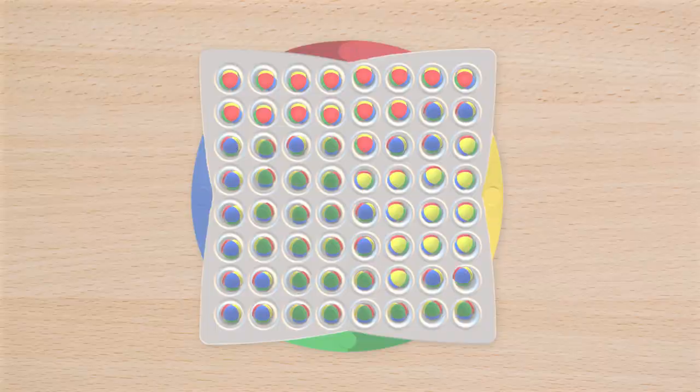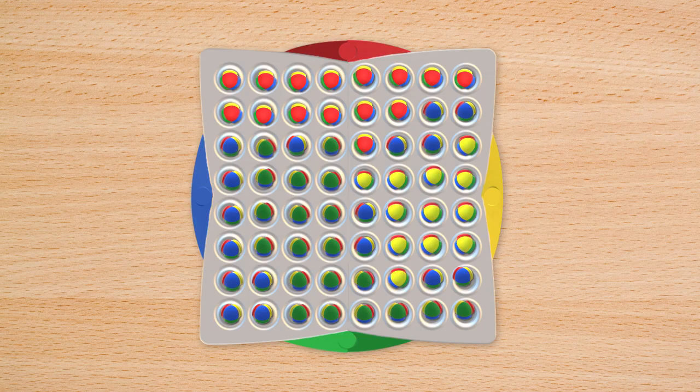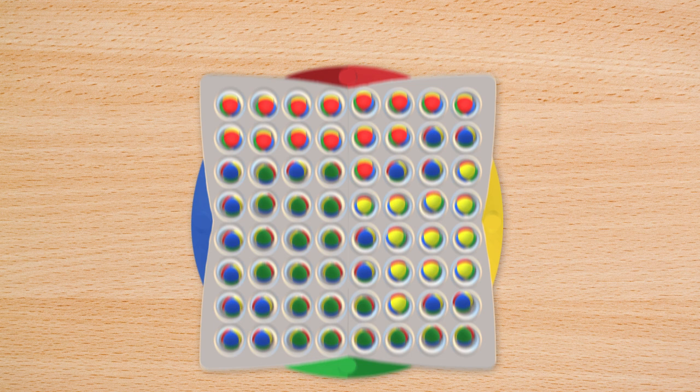Play proceeds clockwise. The game continues until all 64 spots on the game board are filled. Players count balls of their color and the player with the most wins the game.